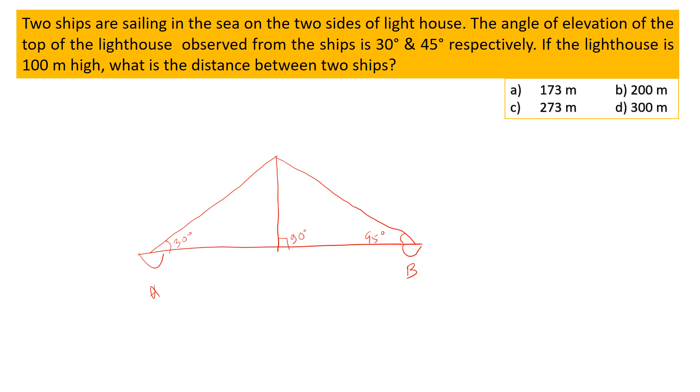And so obviously this angle will become 45°. Here also, this one is 90°, this one is 30°, so this angle is 60°. Let's say this is triangle ABC and this is BCD.